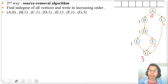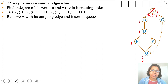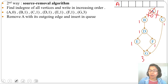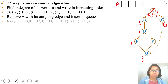Next we remove the vertex with indegree 0, which is our source. Here we remove vertex A and all its outgoing edges, and we insert A into the queue. After removal of A, the indegrees change: B's indegree becomes 0 and C's indegree becomes 0. The rest remain the same, so now we have two vertices with indegree 0.